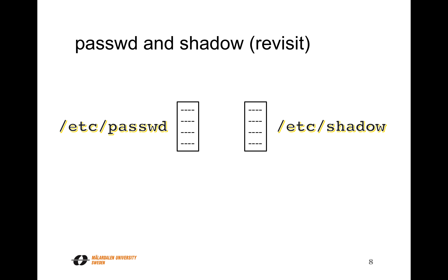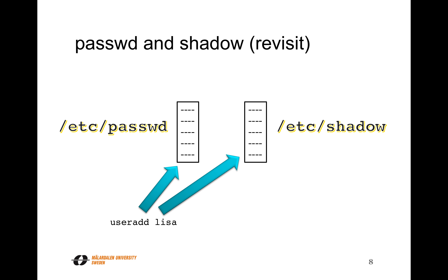What exactly happens when you add a user to the system? Say you type useradd lisa as the root user. The system actually modifies the /etc/passwd file to add this new user and the /etc/shadow file to add the password entry. But the password will actually be empty, so you cannot log in as Lisa until you modify the password with the passwd command. You type the username and specify the password, and that will modify the shadow file and insert the encrypted password.